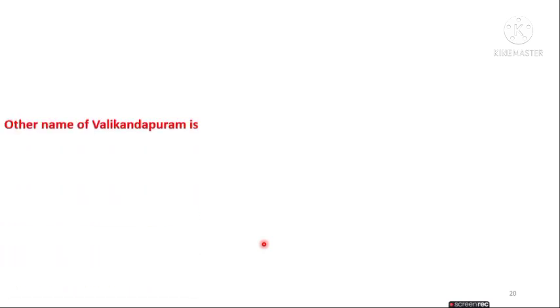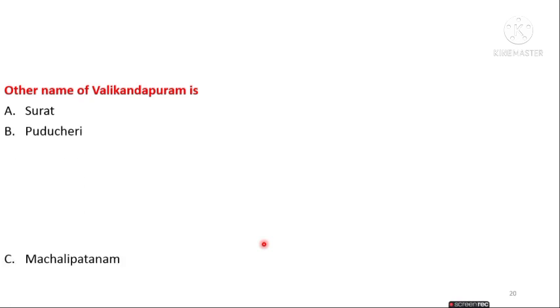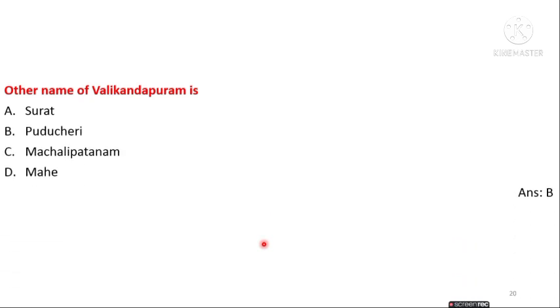The next question is: the other name of Valikandapuram is Surat, Puducherry, Machilipatnam, or Mahe? Option B is the right answer — Puducherry is the other name of Valikandapuram.